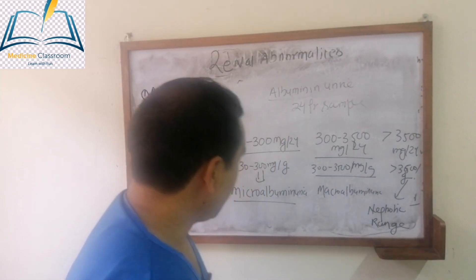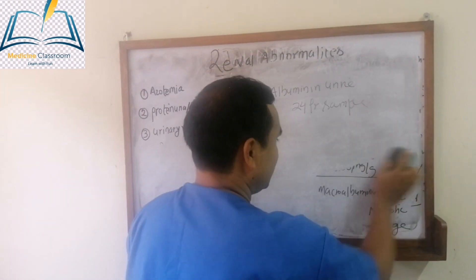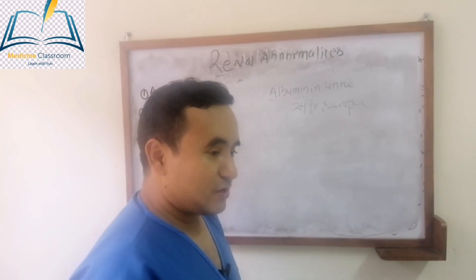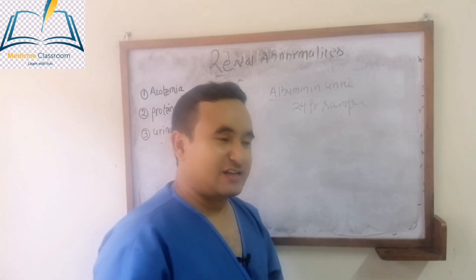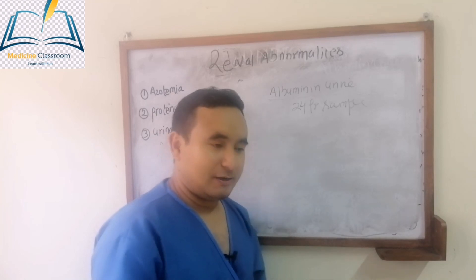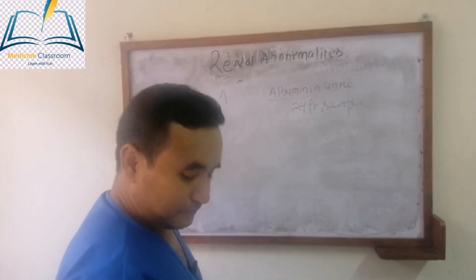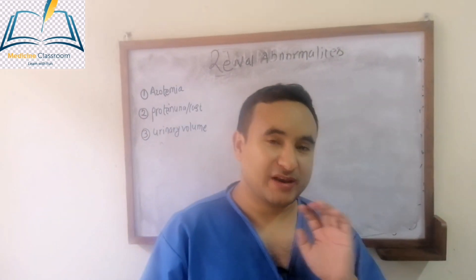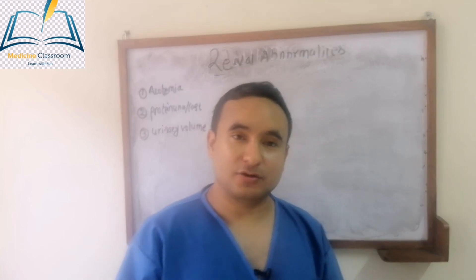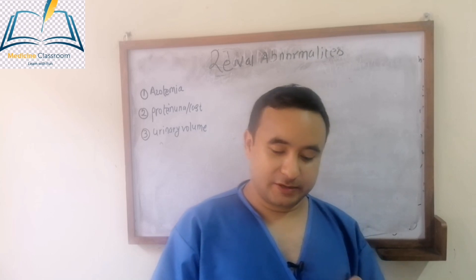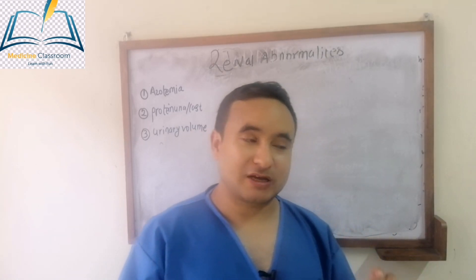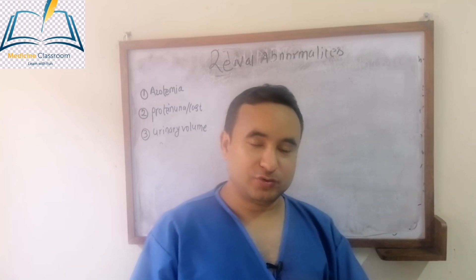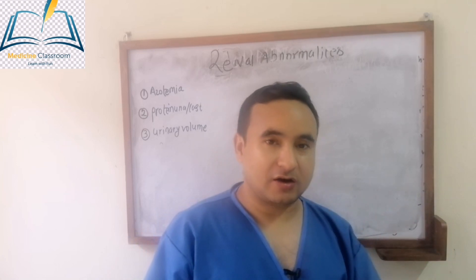This is how we approach a patient with proteinuria and work up accordingly. To revise: normal albumin excreted in urine is less than 30 mg, and normal protein is less than 150 mg. The techniques are the dipstick, 24-hour urine collection, and albumin-to-creatinine ratio. Then divide proteinuria into three parts: microalbuminuria, macroalbuminuria, or nephrotic range proteinuria.